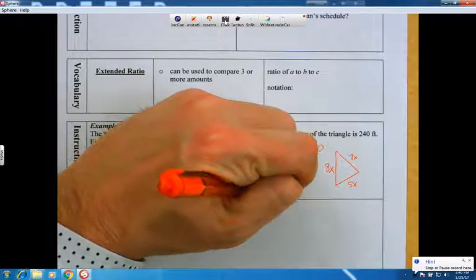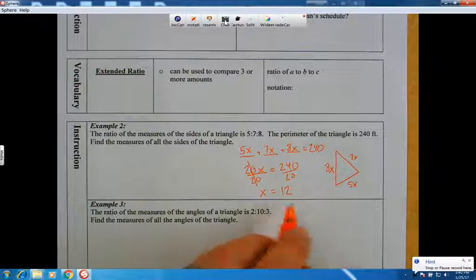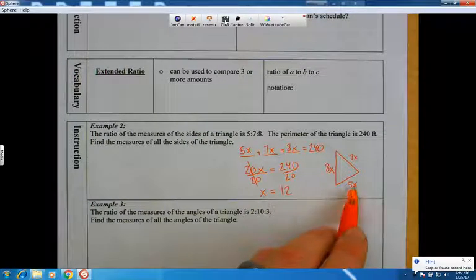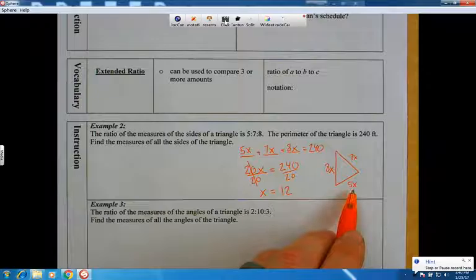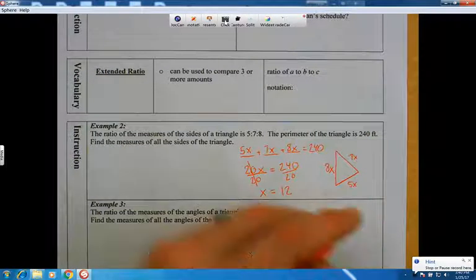X equals, that would be 12, wouldn't it? So x equals 12. So if we take 12 and times it by 5, that will tell us how long this side is. I'm going to do that right now.